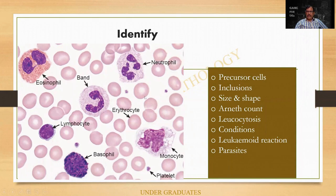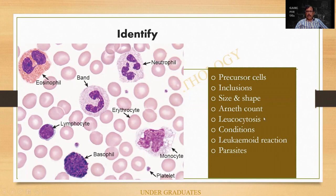Identification of the cells — I have already explained, go through it once again. What are the precursor cells? Arneth count is sometimes asked — it depends on the number of nuclear segments: two, three, four, and five segments. We do not use it nowadays, but some examiners ask. Leukocytosis is an increase — what are all the conditions? What is a leukemoid reaction? It mimics a leukemia. I have clearly explained the difference between leukemia and a leukemoid reaction in my one-page book. What are the parasites we can see? These are, of course, the RBCs.